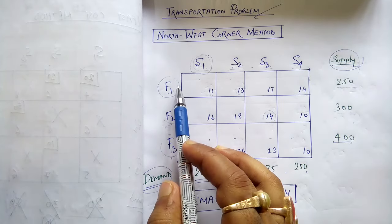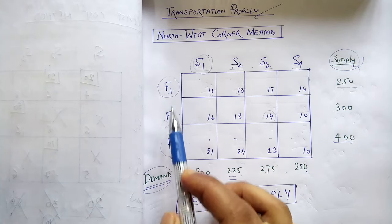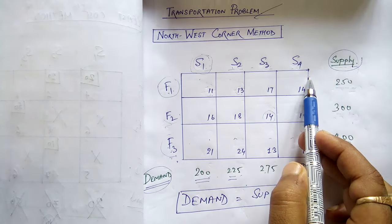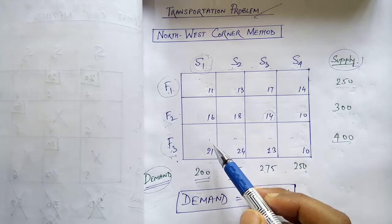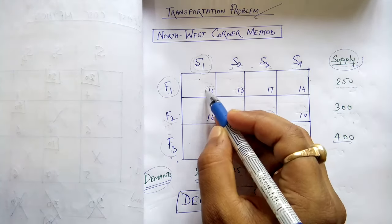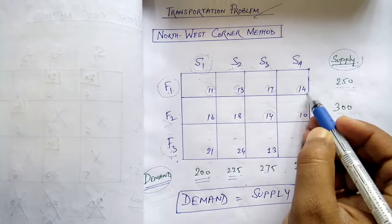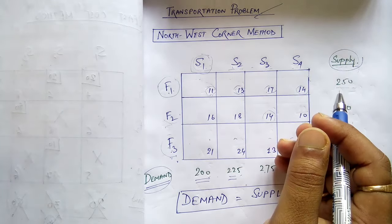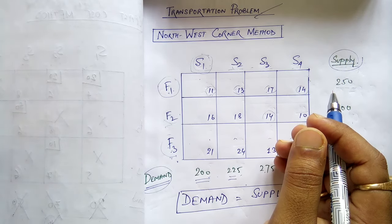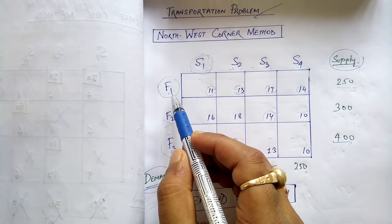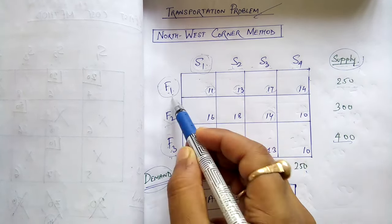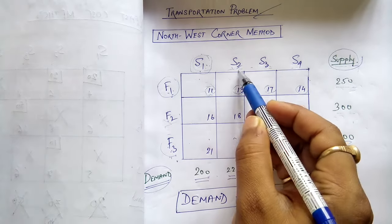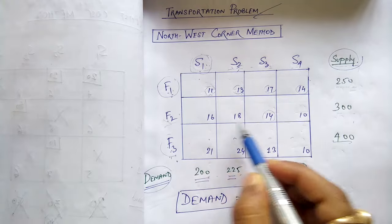Suppose these three are factories and these four are stores. Try to understand the values given here — what do they indicate? These values indicate the cost of transporting one good from factory 1 to store 1, from factory 1 to store 2, from factory 2 to store 1, from factory 2 to store 2, and so on.